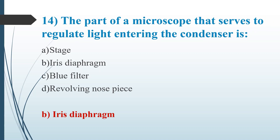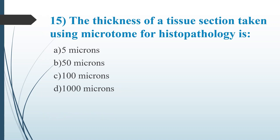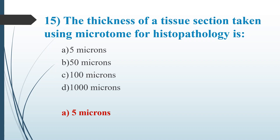Fifteenth question: The thickness of a tissue section taken using microtome for histopathology is. Option A, 5 microns. Option B, 50 microns. Option C, 100 microns. Option D, 1000 microns. Answer is Option A, 5 microns.